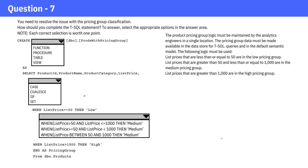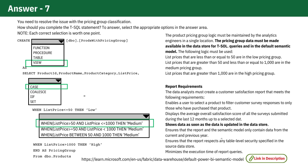Next question: you need to resolve the issue with the pricing group classification. How should you complete the T-SQL statement? Take a moment to review the code and check the answer. The correct answer is VIEW, because it meets the requirement of showing data as soon as it is updated in the data store. If you thought TABLE because it should be part of the default semantic model, you are mistaken — within the warehouse, a user can add warehouse objects, tables or views, to their default Power BI semantic model. Therefore, the correct answer is VIEW, as it displays data immediately after updates. A link is provided in the description to support this answer. The next correct answer option is a basic SQL CASE statement.